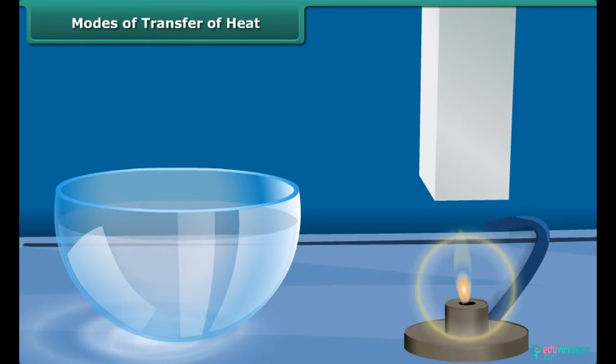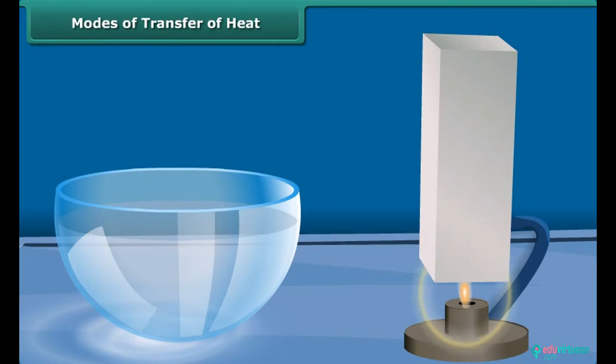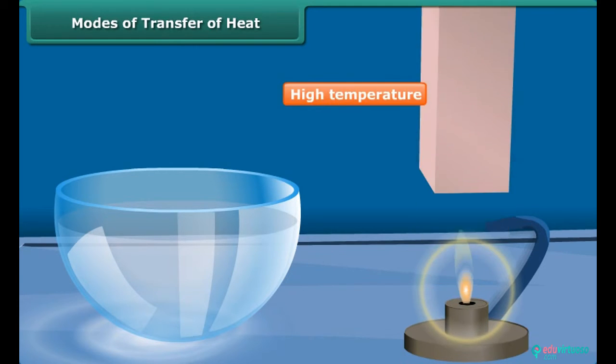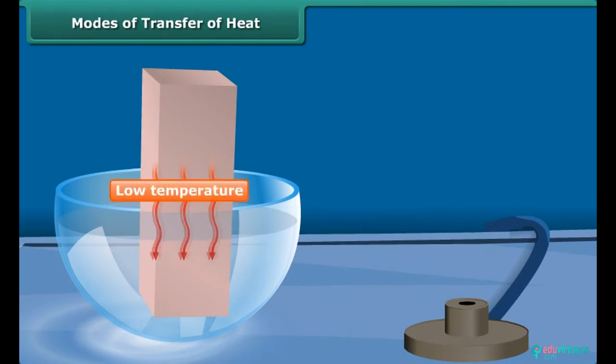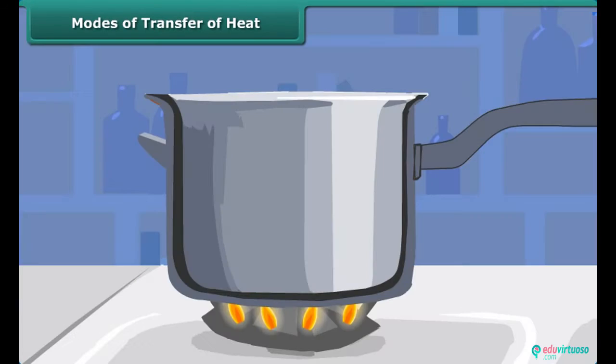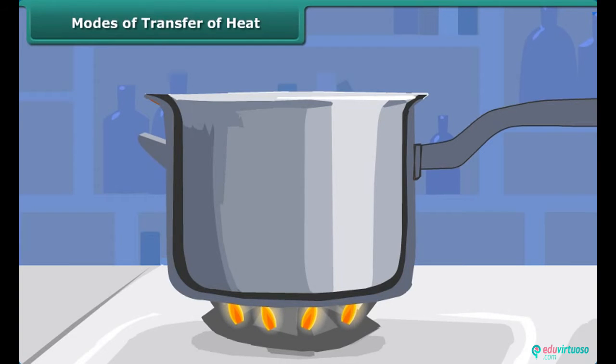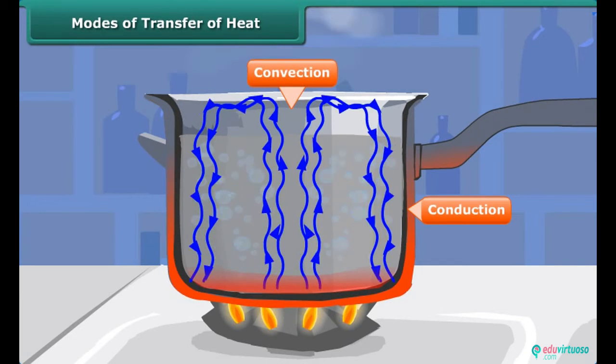Flow of heat takes place in a particular direction, that is, from bodies at higher temperature to bodies at a lower temperature, as water flows from a higher to a lower level. There are three modes of transfer of heat from one place to another: conduction, convection and radiation.